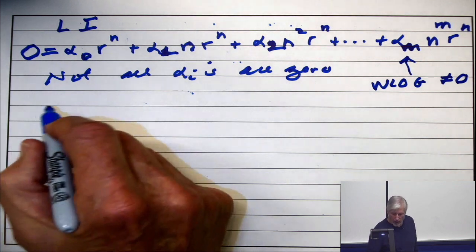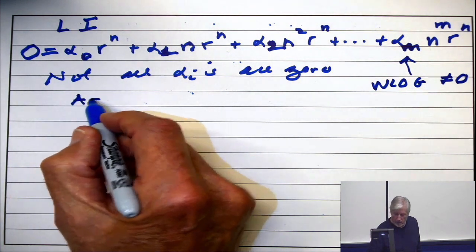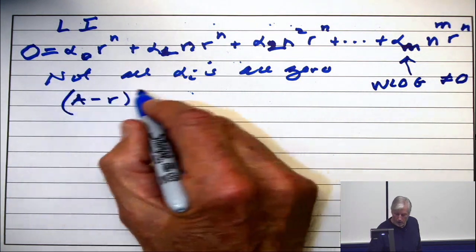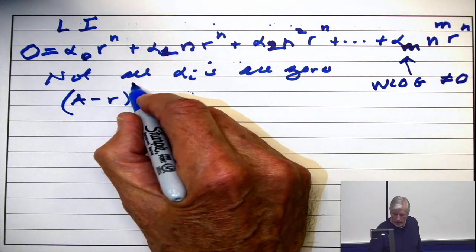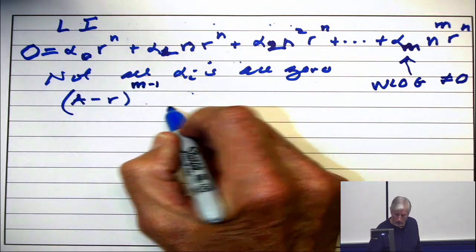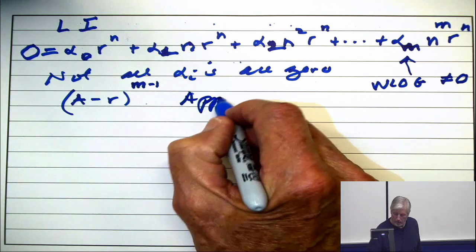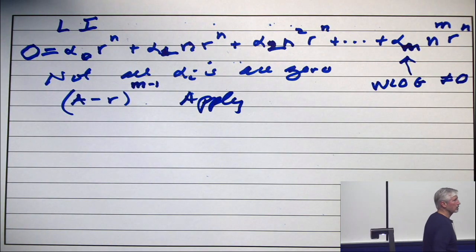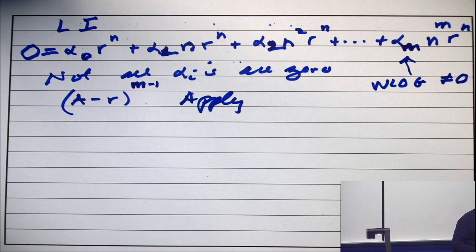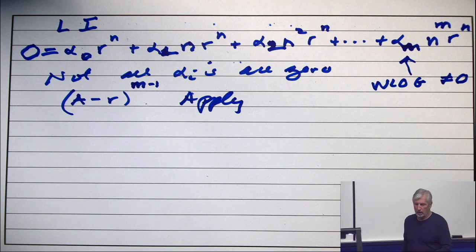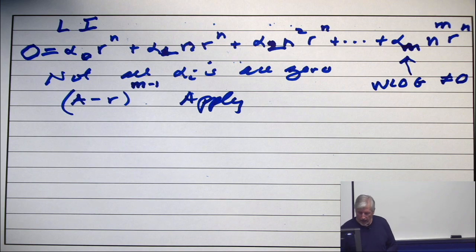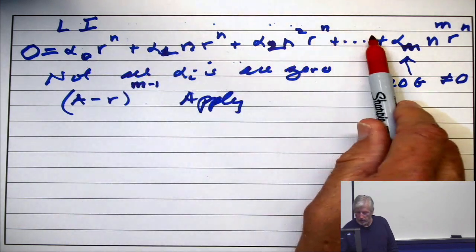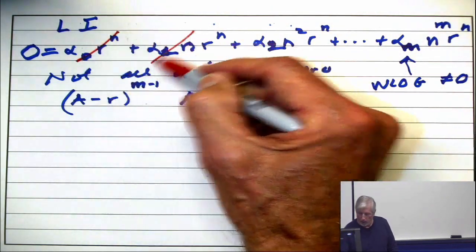Okay, then apply A minus r to the m minus 1. Apply this to that expression. What will you get? When you apply A minus r to any of these things, it'll kill them. They'll all be gone.